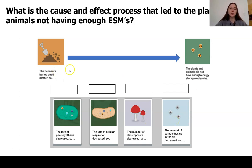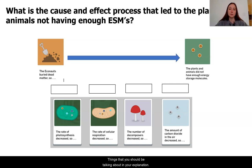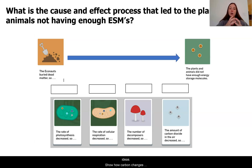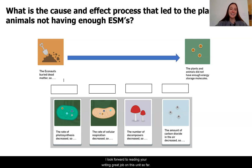Use this as an outline to track the things that you should be talking about in your explanation, and use all of the evidence that we have collected throughout our investigations and our understandings of the key ideas that show how carbon changes from biotic to abiotic matter through this cycle. I look forward to reading your writing. Great job on this unit so far.